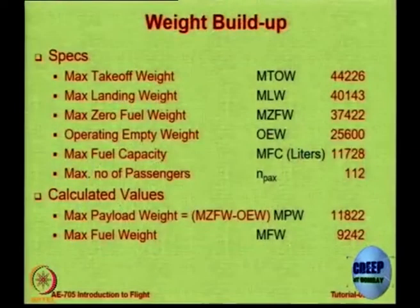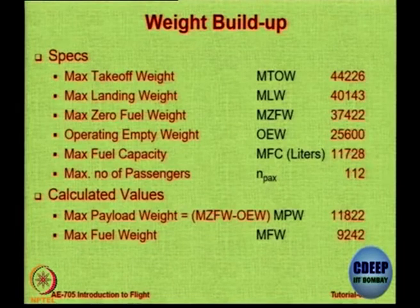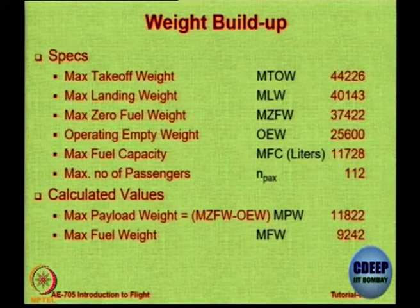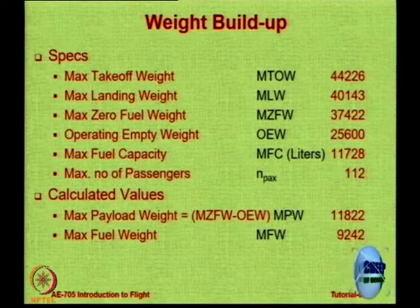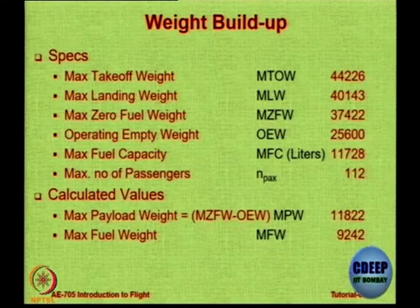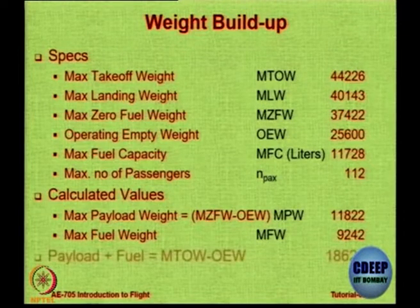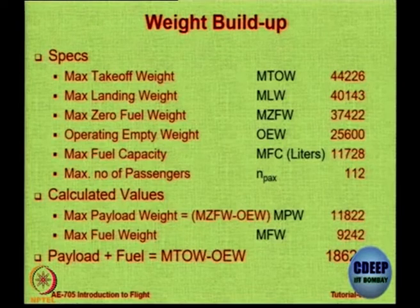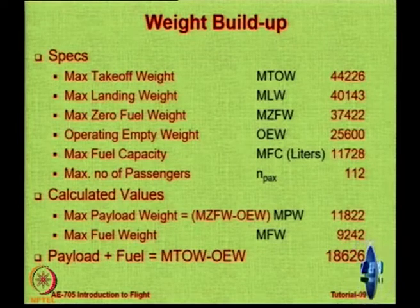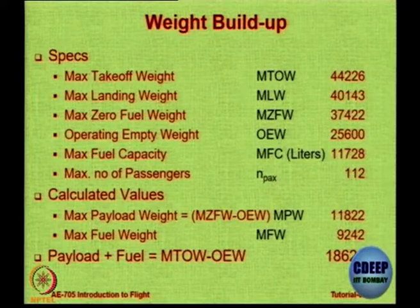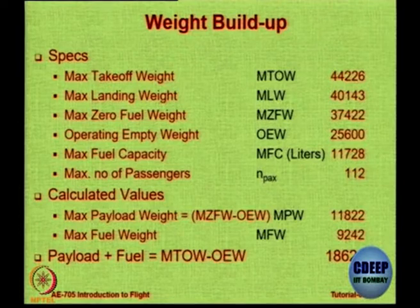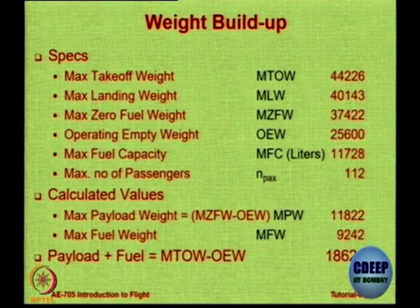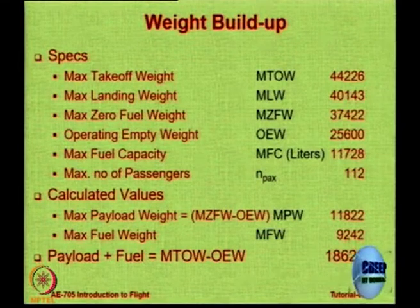The maximum payload weight you can carry is the maximum zero fuel weight minus the operating empty weight, because the difference can only be payload. The maximum payload weight is 11,822 kg, and the maximum fuel weight is simply the liters of fuel multiplied by fuel density. Therefore, the summation of payload and fuel can only be the maximum takeoff weight minus the operating empty weight. The total of payload and fuel is going to be 18,626 kg — this is what the airline can play with.